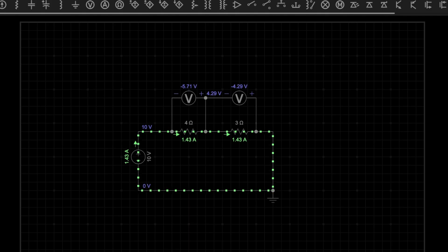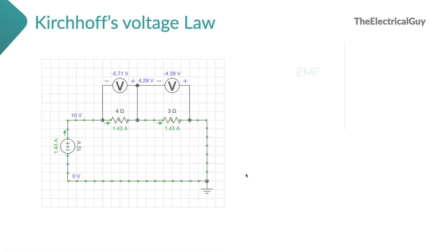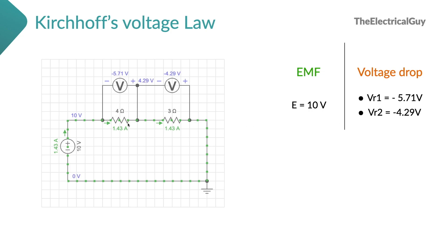Let's evaluate this circuit in more detail. In this circuit there is only one EMF, which is 10 volts from our battery. The voltage drops are: VR1 across the 4 ohm resistance at negative 5.71 volts, and the second voltage drop of negative 4.29 volts across the 3 ohm resistance. If you add the EMF and voltage drops together you get zero.